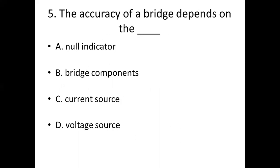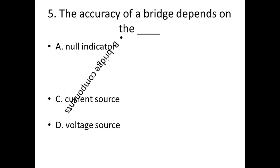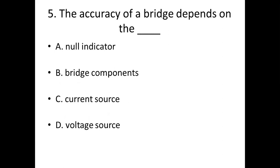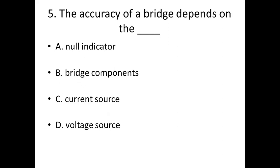Fifth bit. The accuracy of a bridge depends on the dash. Option A: null indicator. Option B: bridge components. Option C: current source. Option D: voltage source. Answer: Option B, bridge components.